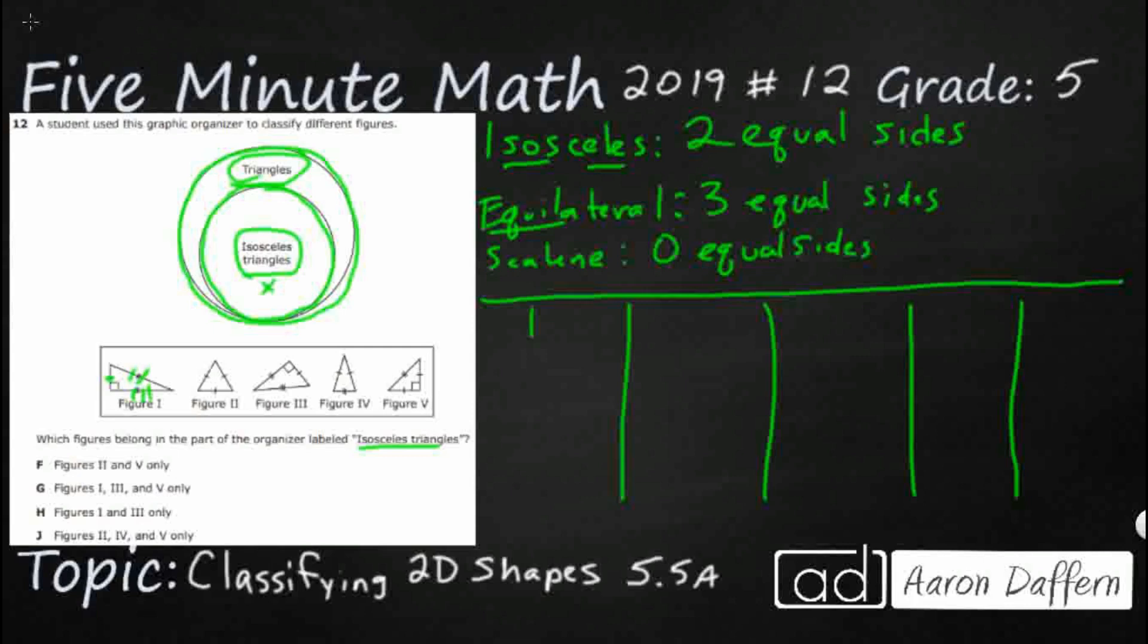So that means that all the hash marks talk about the side length. They didn't really tell you that, but they are letting you know that those are the different side lengths. So you notice I've got three different side lengths. That means that none of the side lengths are equal.